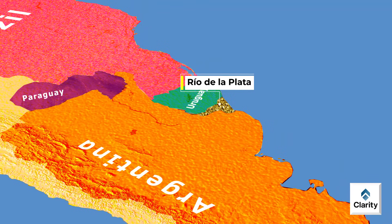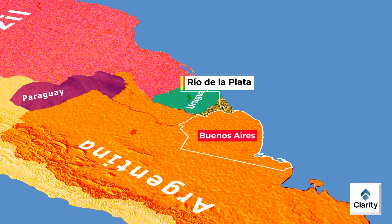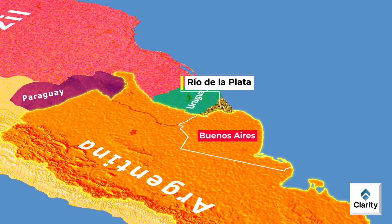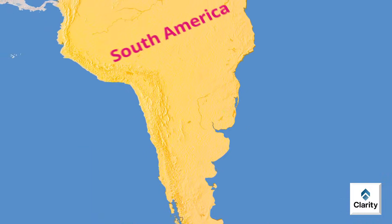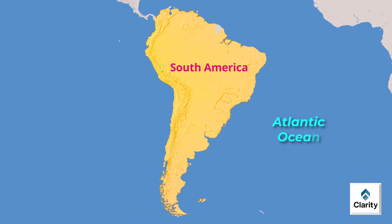The Rio de la Plata forms a natural border between Argentina and Uruguay. Two major capital cities are located along it: Buenos Aires, the capital of Argentina, lies on its western shore, and Montevideo, the capital of Uruguay, lies on its eastern shore. The Rio de la Plata is economically important, serving as a major shipping route connecting inland cities with the Atlantic Ocean.